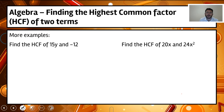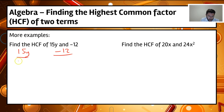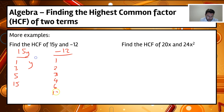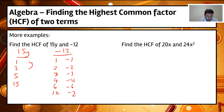A couple more examples. For 15y and minus 12: the factors of 15y are 1, 3, 5, and 15, plus the y. For minus 12, we have 1, 2, 3, 4, 6, and 12 — and because it's a minus, we also include minus 1, minus 2, minus 3, minus 4, minus 6, and minus 12. Looking at both lists, 3 is the highest common numerical factor, so the HCF equals 3.